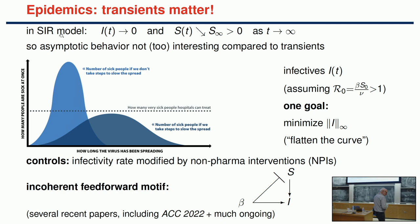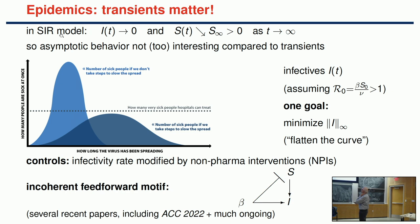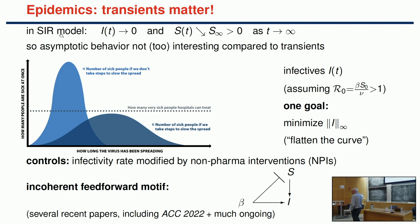I got interested, as everybody else, in modeling epidemics and COVID in the last few years. If you take the simplest models, say the SIR model, you know that eventually all the infectives are going to go to zero—assuming no reinfection and that we develop immunity. So eventually the infections are going to go to zero. That's not a problem.